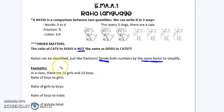So looking at this example, in a class there are 20 girls and 15 boys. I want to write the ratio of boys to girls. So the order here is really important. I'm going to write the boys first. So we have 15 boys to 20 girls.